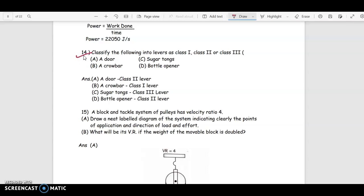Again we have another question. Classify the following into levers as class 1, class 2 or class 3. So a door, it is class 2 lever. Sugar tongs, it is class 3 lever. Then crowbar is class 1 lever and bottle opener is class 2 lever.